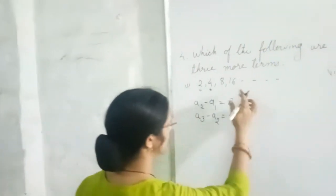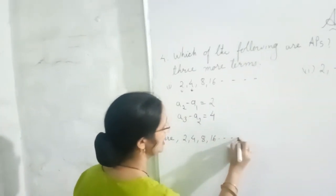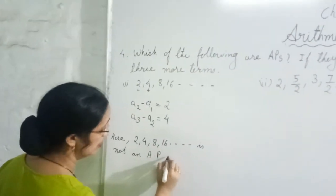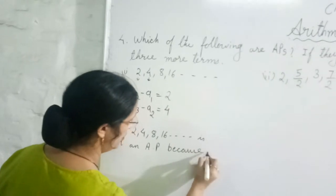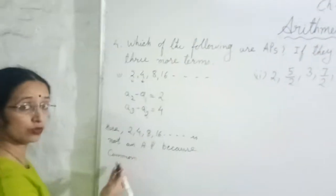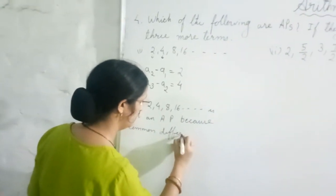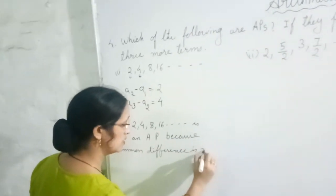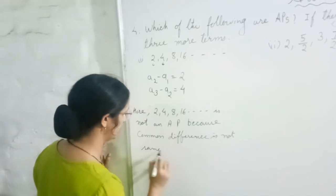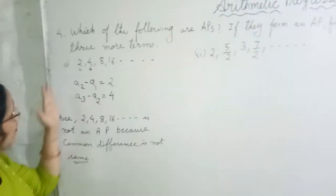It is not coming same. So we will write here 2, 4, 8, 16 is not an AP. Because common difference is not same. Common difference means the difference between the terms should be same. So in simple language we can write, common difference is not the same or not fixed. One time it is coming 2, one time it is coming 4. So this is not an AP.